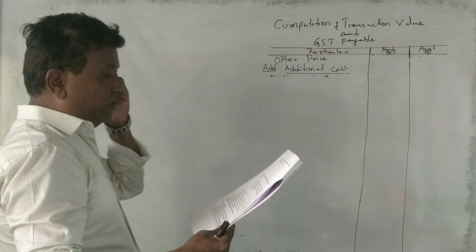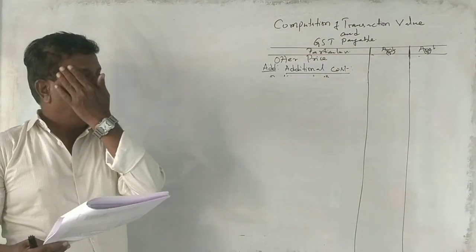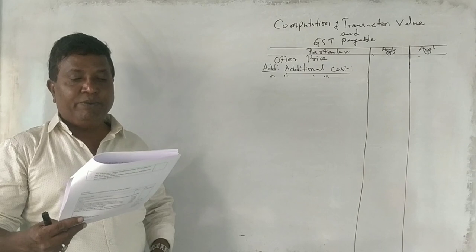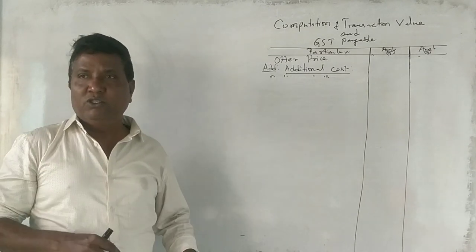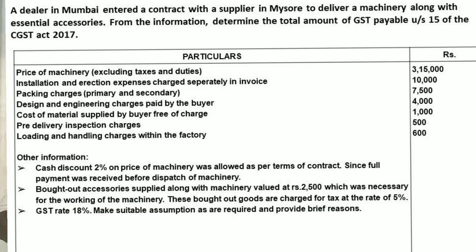Okay students, this is a question on composite supply. A dealer in Mumbai entered into a contract with a supplier in Mysore. He made a contract with the supplier to deliver machinery along with essential accessories. From the information, determine the total amount of GST payable under Section 15 of the GST Act of 2017.